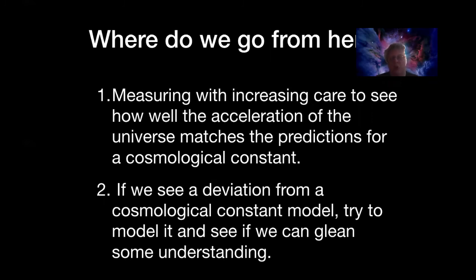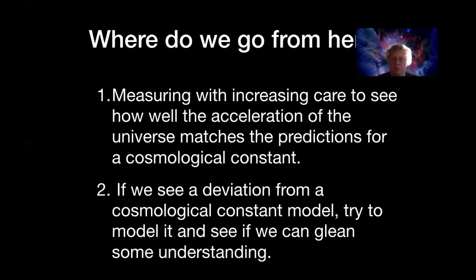We really don't have a good handle on what could possibly be causing it. Our current strategy is really one of reconnaissance. How do we understand something so strange, so different from everything else we know about in physics? The strategy we've chosen is to keep learning more and more about it — to map out with increasing precision exactly how the universe is accelerating. We need to push our supernova observations to even greater distances, measure even more of them, and find just exactly how fast the universe is accelerating and if there are any patterns in that acceleration over time. What we're hoping for is to see something that doesn't quite match everything else we know about cosmology, because if we see a deviation it might tell us where to look to figure out what the actual cause of dark energy might be.